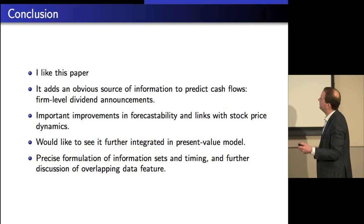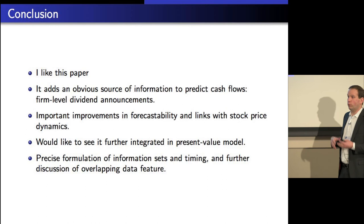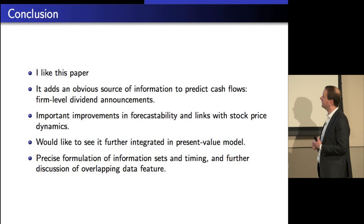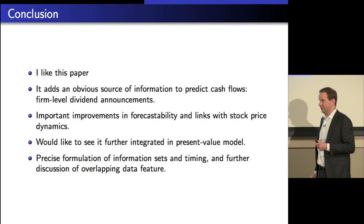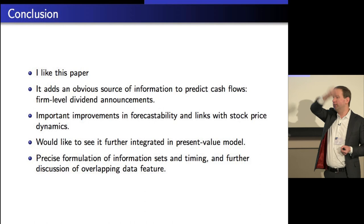To conclude: I like this paper. It adds a very obvious source of information, and it works — we get improved predictability, so I really like that. There's no link made to the present value model, though. I would like the authors to take this new G-T series, plug it into the present value equation, and show that returns are also better predictable. Because anything that better predicts dividend growth, combined with the present value identity, means an improved estimate of expected returns as well. Thank you very much for having me discuss.